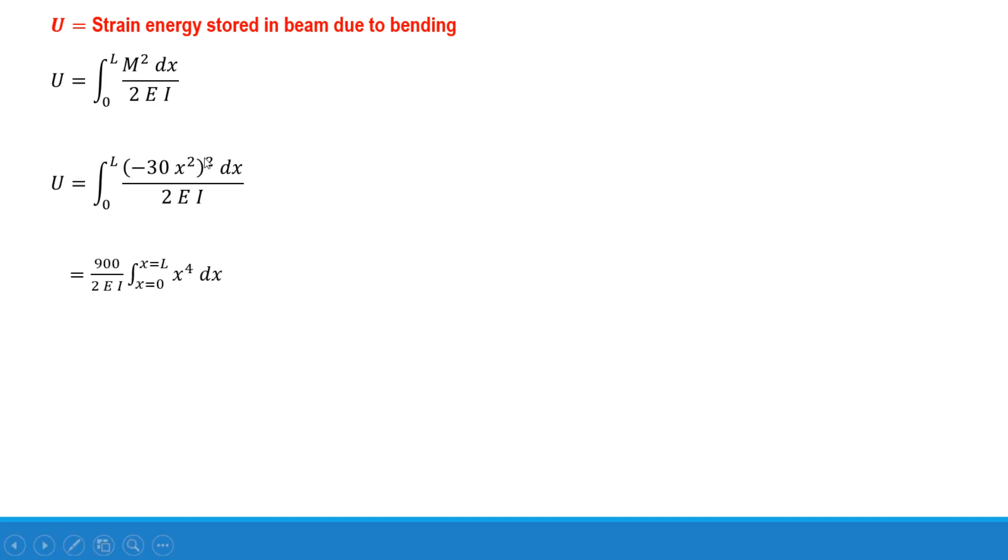(-30)² is 900, which we have taken outside the integration sign, and 2EI is also constant, taken outside the integral sign. Integration from x = 0 to x = L: x² squared, that is x^4 dx. Integration of x^4 is x^5/5 and the limits are from 0 to 4 meters.